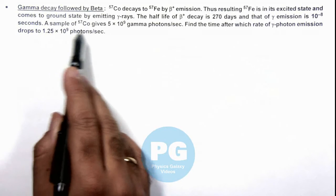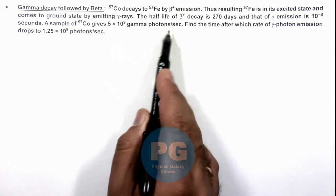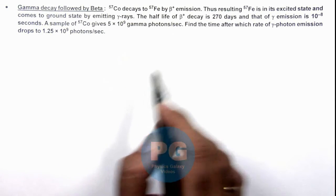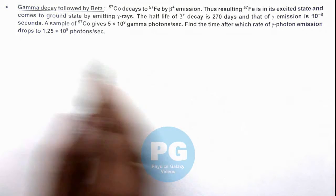A sample of Cobalt-57 gives this rate of gamma photons per second, and we are required to find the time after which the rate of gamma photon emission drops to this value.